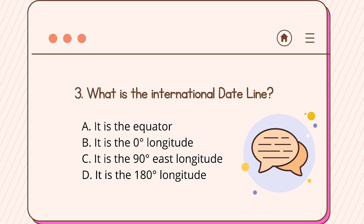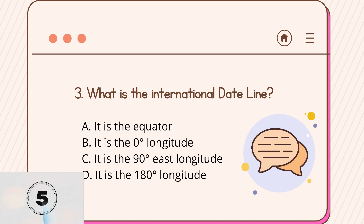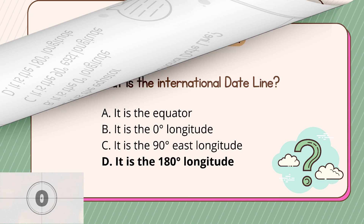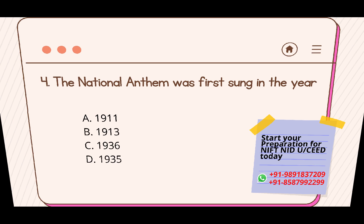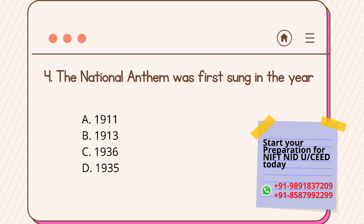Question number three: what is the International Date Line? Option A: it is the equator, Option B: it is the zero degree longitude, Option C: it is the 90 degree east longitude, Option D: it is the 180 degree longitude. The correct answer is Option D, 180 degree longitude.